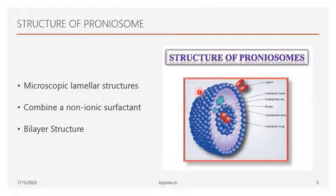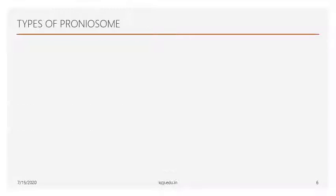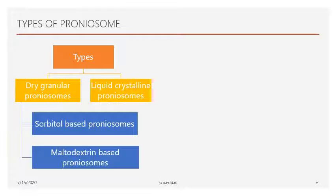The proniosome structure is round and spherical in shape — a microscopic lamellar structure — similar to liposomes. It is a bilayer structure capable of carrying both hydrophilic and hydrophobic drugs due to the non-ionic surfactants used. There are mainly two types of proniosomes: dry granular proniosomes and liquid crystalline proniosomes.